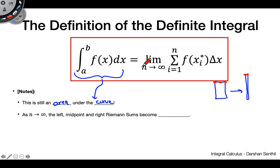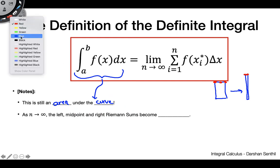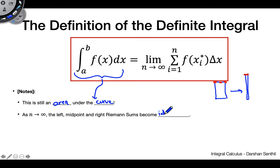So when we take this limit as n goes to infinity, when we make our rectangles infinitely thin, the left midpoint and right Riemann sums become identical. In other words, we don't even need to bother with distinguishing them anymore because all three are just going to be the same thing.